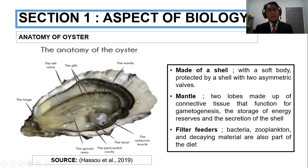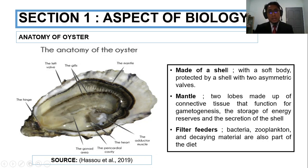The oyster is made of a shell with a soft body protected by two asymmetric valves. The essential parts include the mantle, the adductor connecting tissue, which functions for gametogenesis, breeding, storage of energy reserves, and secretion of the shell. The oyster is a filter feeder; they consume bacteria, zooplankton, and decaying matter.